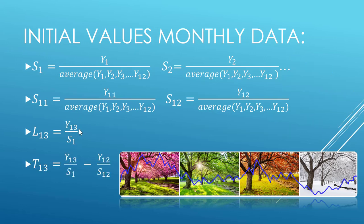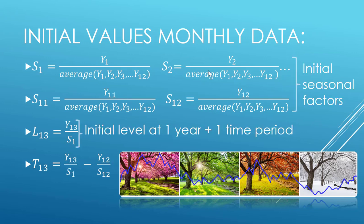Our level is 13, so y13 over s1. S1 because these two are in the same month. Then trend 13 is y13 over s1 minus y12 over s12. We're again de-seasonalizing each of our actual data values by dividing by the seasonal factors and then comparing them to get that upward trend. Here are our initial seasonal factors, here's our initial level, here is our initial trend.